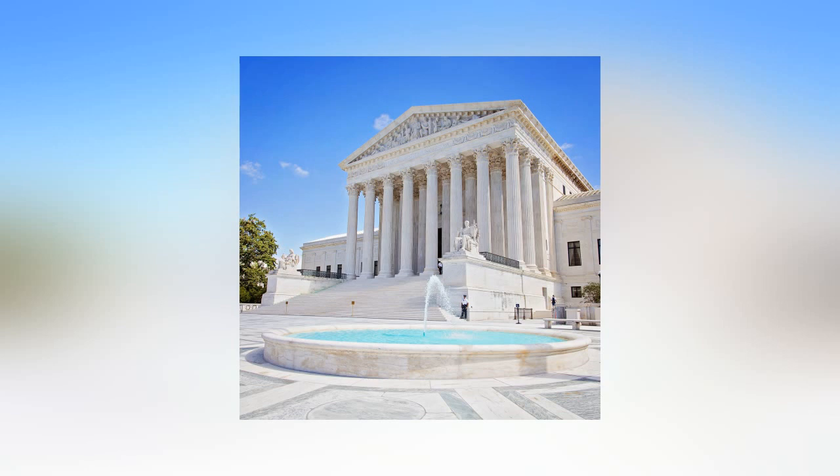The Foreign Affairs Reform and Restructuring Act of 1998, FARRA, implements Article 3 of CAT and provides for judicial review of CAT claims as part of the review of a final order of removal, Section 2242(d). The Real ID Act of 2005 clarifies that final orders of removal and CAT orders may be reviewed only in the courts of appeals, Sections 1252(a)(4) and (5).